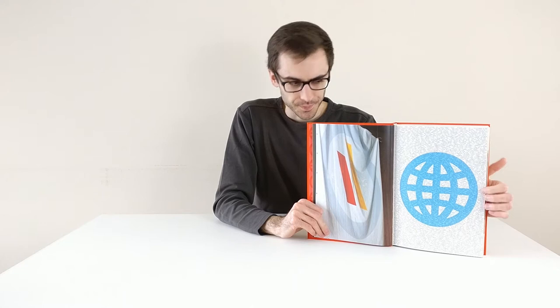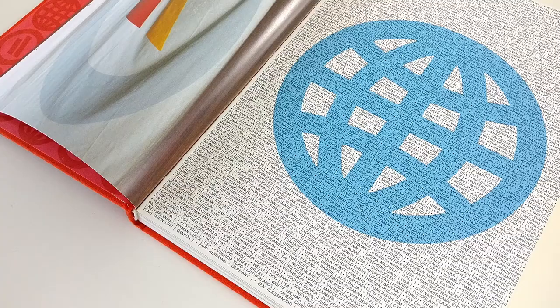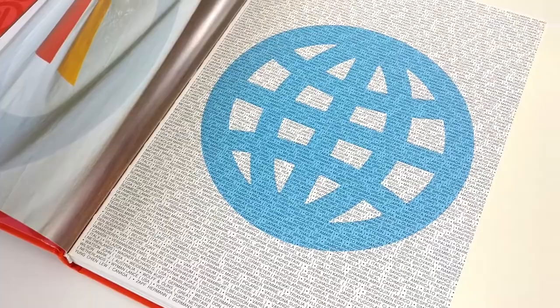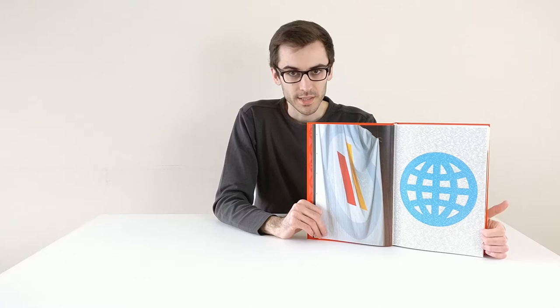This page here on the right side is again the globe icon, and you can see that there is text written over it. That text contains all the names of the logo designers or brand designers that were represented and that were present at this logo festival.